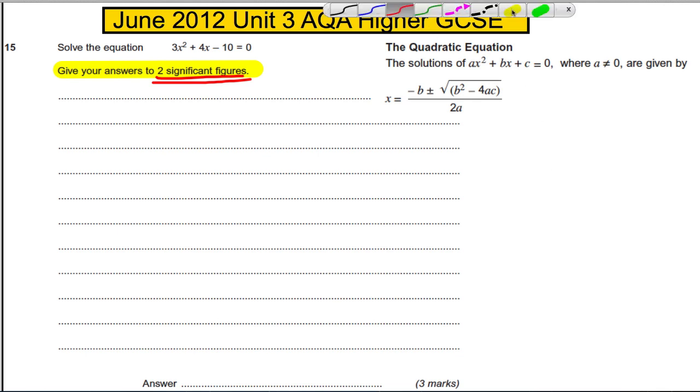The way I show students to do this, just to make sure you make no silly errors at all, the first thing I'd like you to do is state your a, b, and c. a is the number in front of x² which is 3, b is the number in front of x which is 4, and c is the number term which is -10. Make sure you get the negatives correct because it's of the form ax² + bx + c, so therefore we must know it's plus negative 10.